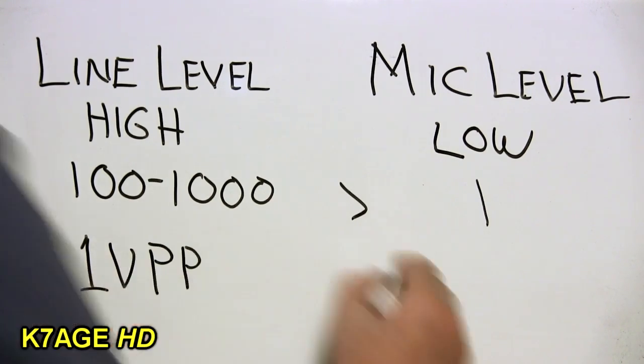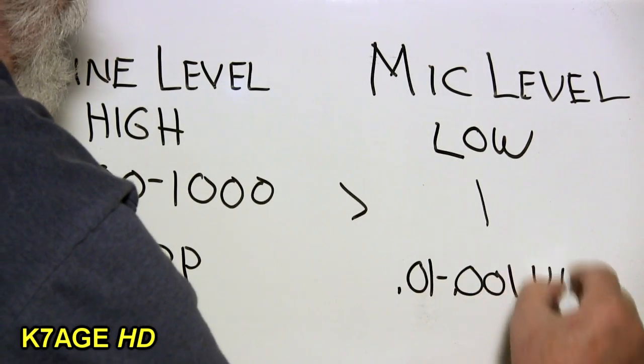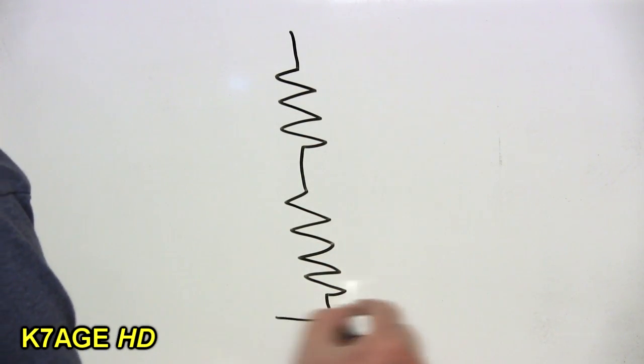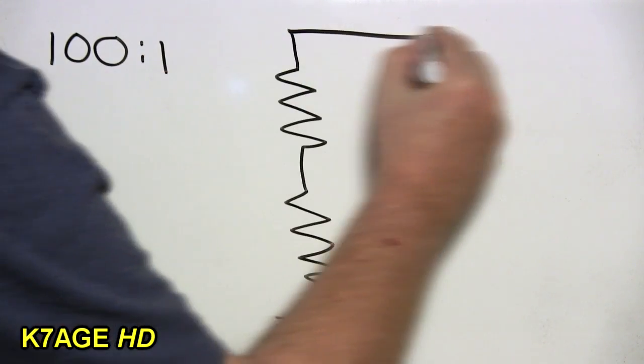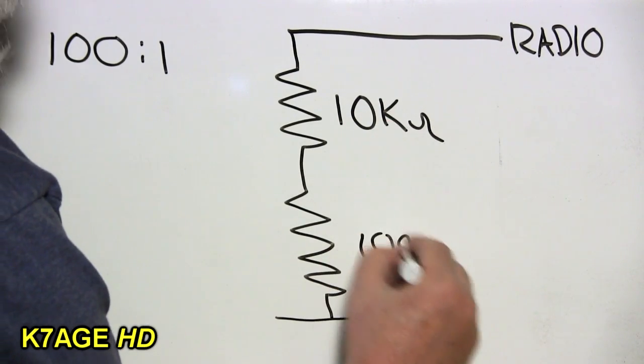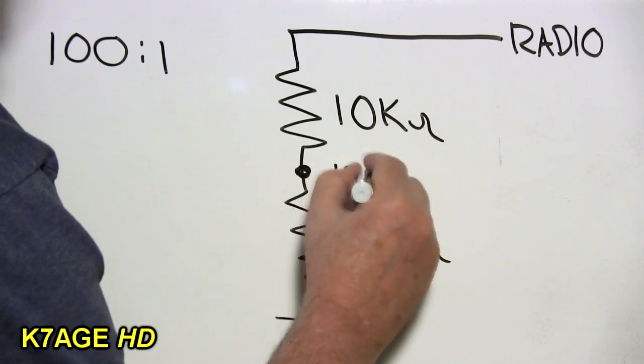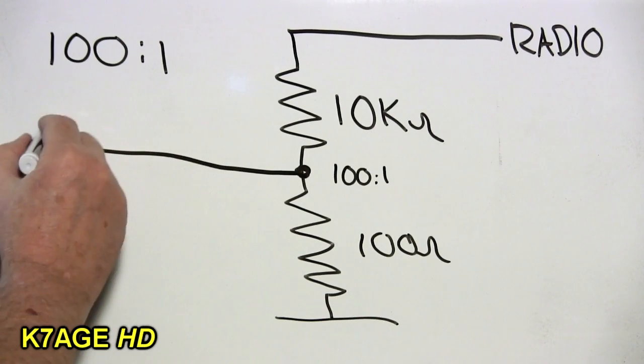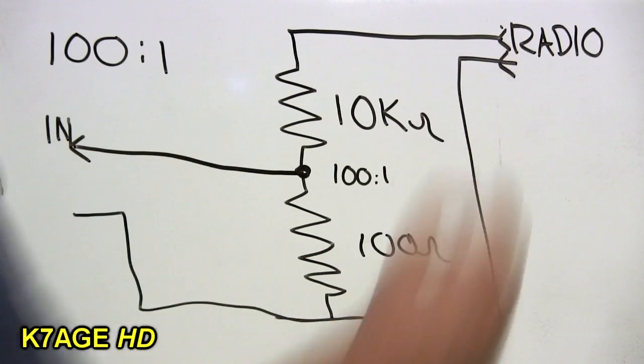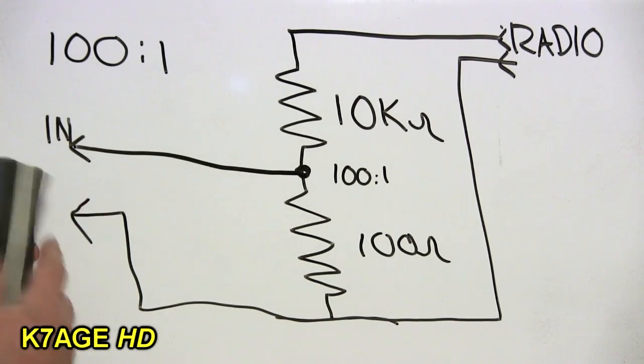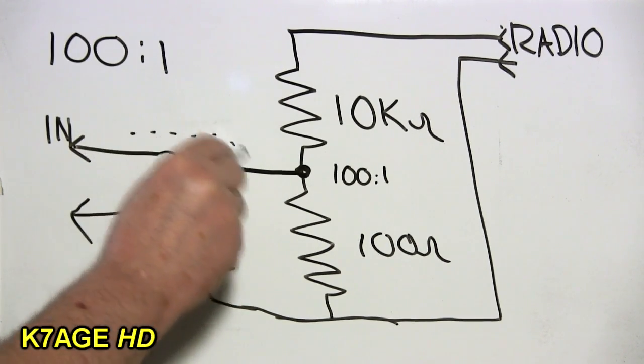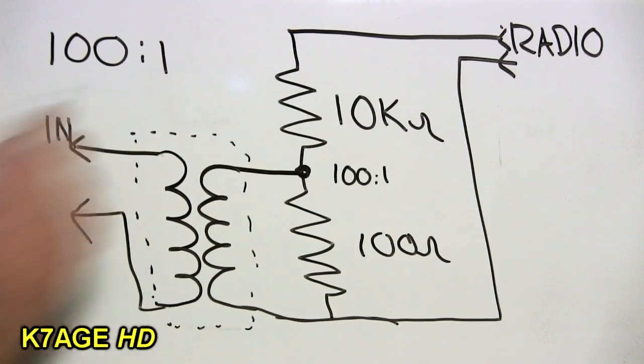So a line level on a computer is typically a hundred to a thousand times greater than a mic level. Line level is around one volt peak to peak signal whereas a mic level can be around 10 millivolts to one millivolt. A way to correct this problem is using a resistor voltage divider with a 100 to 1 ratio. So I come out of the radio through a 10k resistor in series to a hundred ohm resistor to ground. If I tap off for the microphone input at the junction of the two that signal there will be 100 times lower than what goes in or what comes out of the radio. And I can also use transformers with this to provide ground isolation between the computer and the radio.